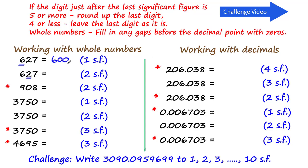You might prefer to just use the rules directly. Applying those rules to 627: we look to the next digit to the right of the 6, which is a 2. It is 4 or less, so we do not round up. We leave the significant digit as it is and fill back the remaining two places with zeros — the rule for whole numbers. So we end up with 600.